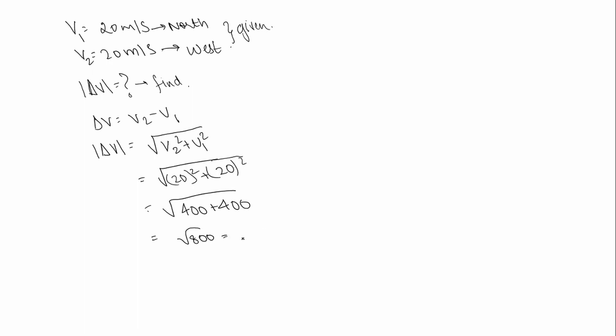800 can be written as 100 times 4 times 2. Root 100 is 10, so 10 comes out. Root 4 is 2, so 2 comes out, and root 2 is left inside. So the magnitude of change in velocity is 20 root 2.